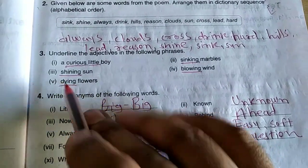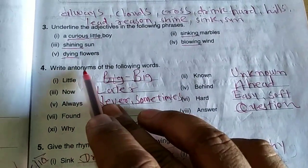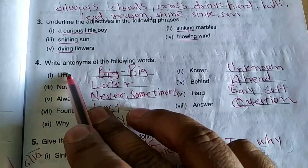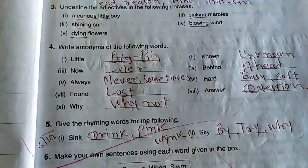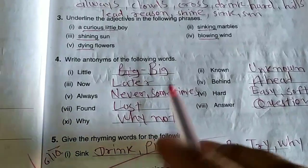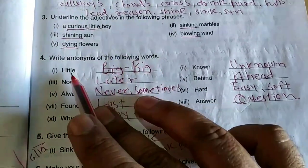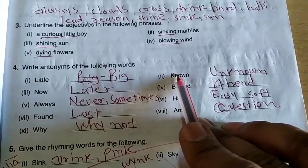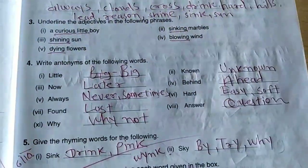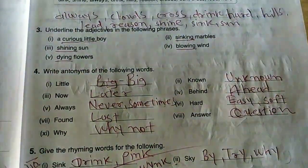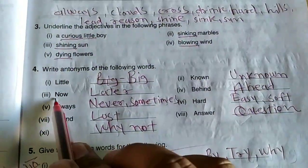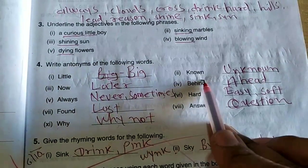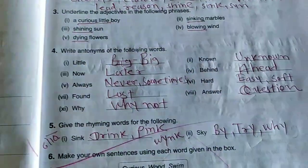'Dying flowers' — dying is the adjective. Write antonyms of the following words: little — opposite is big (little means chhota, big means bada); known — unknown (known means jana hua, unknown means nahi jana hua); now — later (now means abhi, later means baad mein); behind — ahead (behind means peeche, ahead means aage).